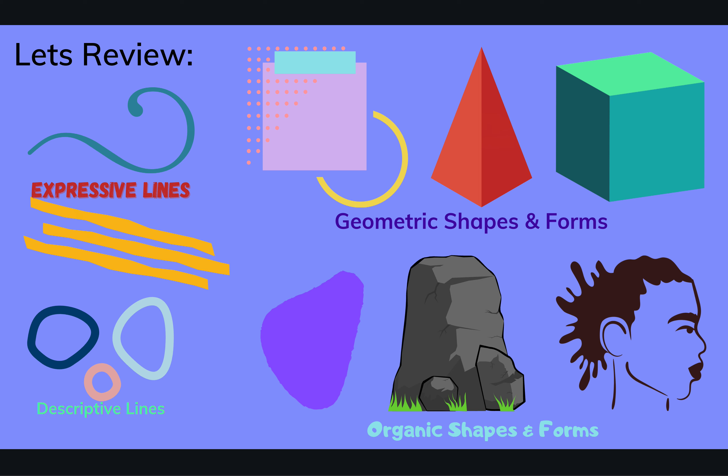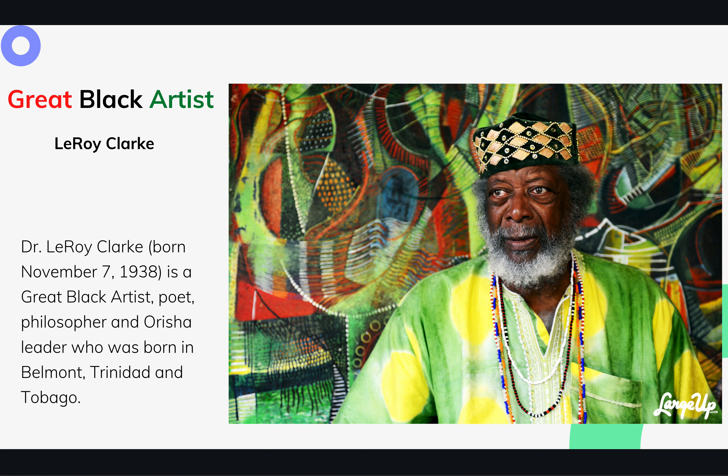Today, we're going to go a step further and learn a little bit about the expressive qualities of shapes and forms. We're going to do that by looking at a great black artist. This great black artist, Leroy Clark, was born November 7, 1938. He is a master artist, a poet, a lecturer, philosopher, and an Orisha leader.